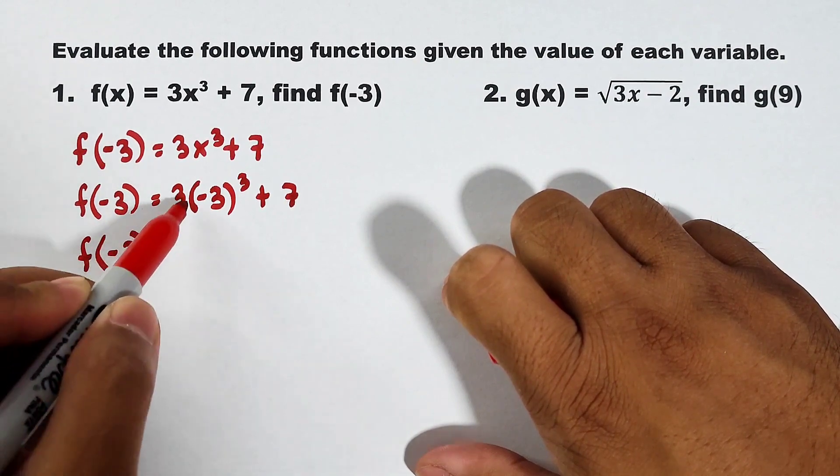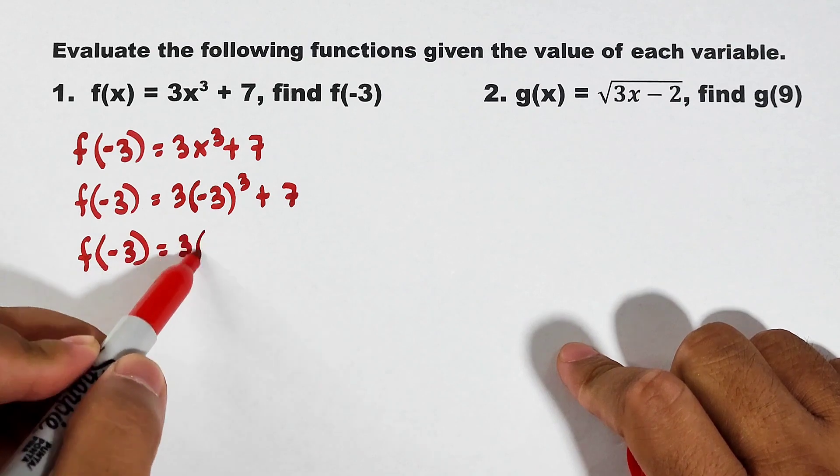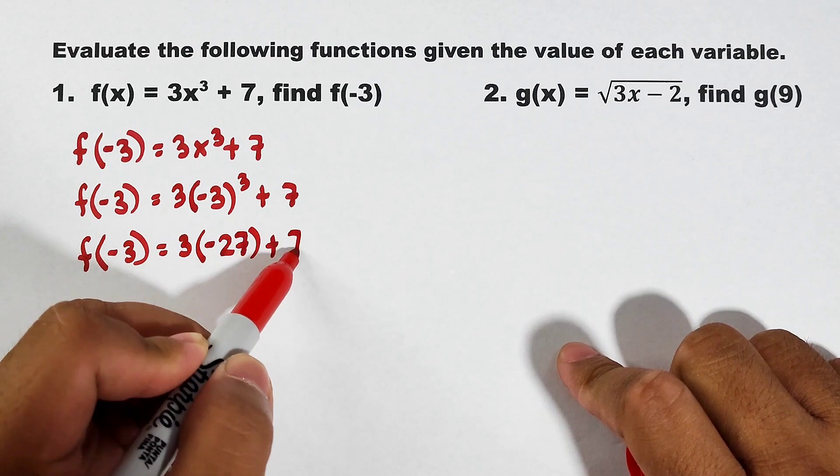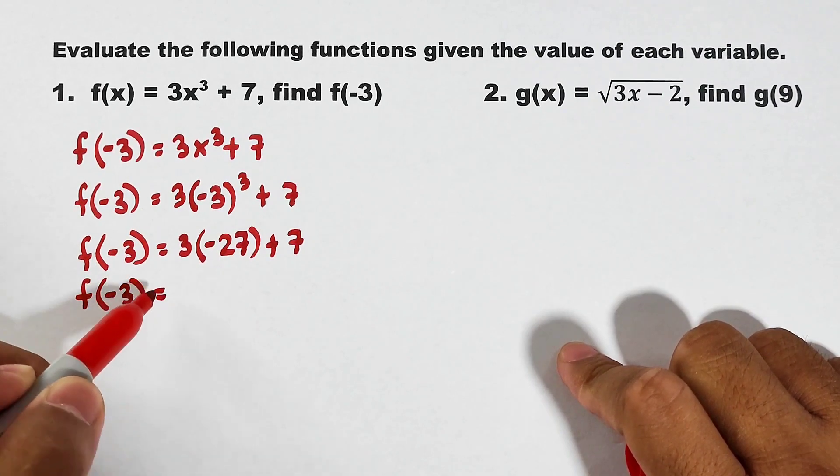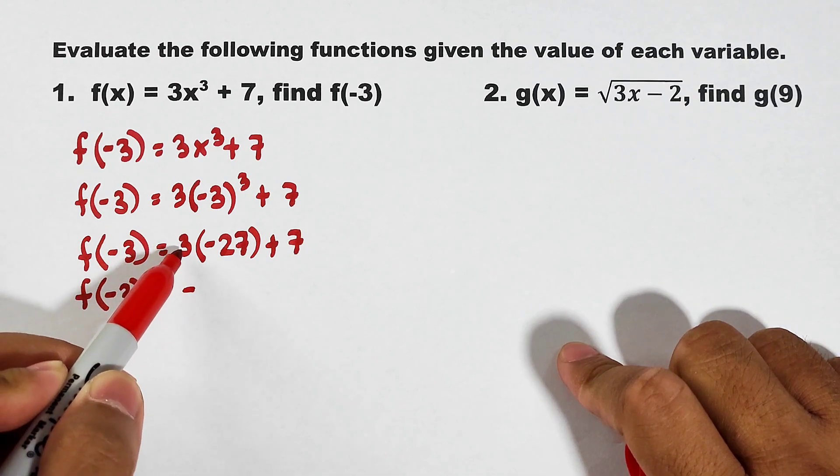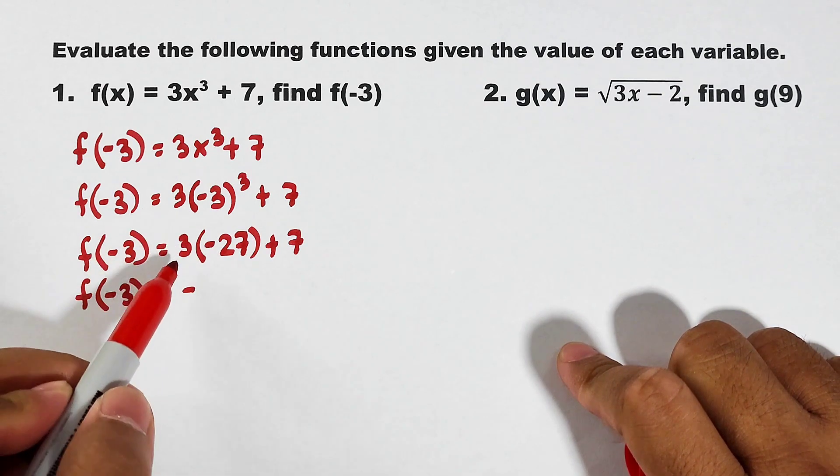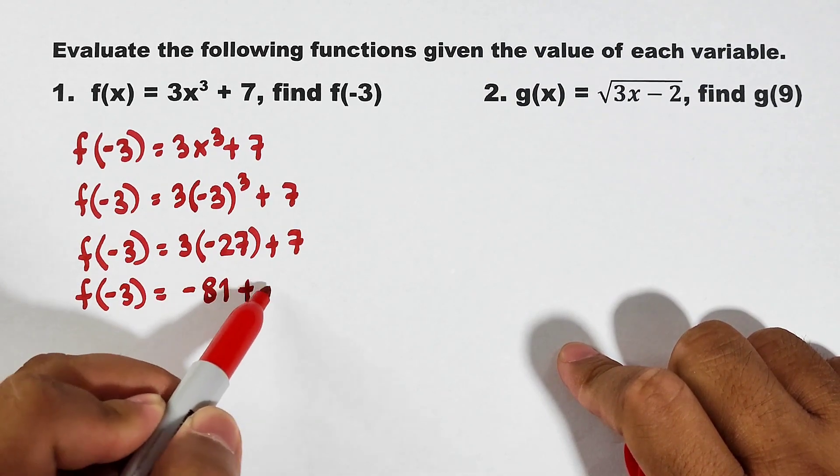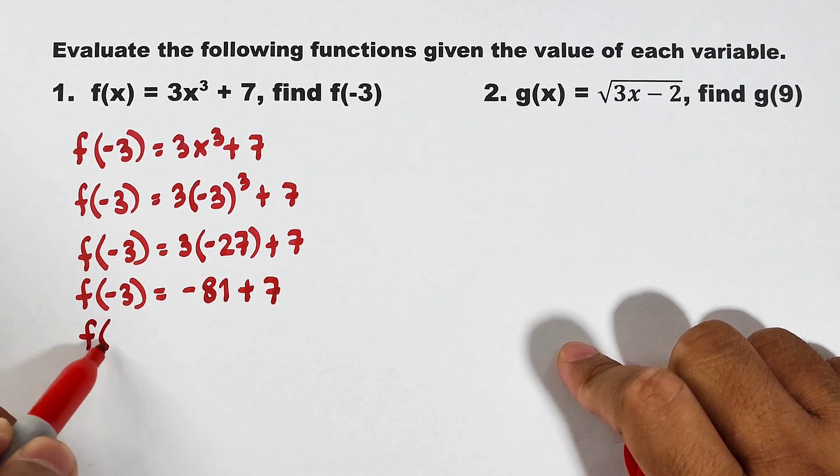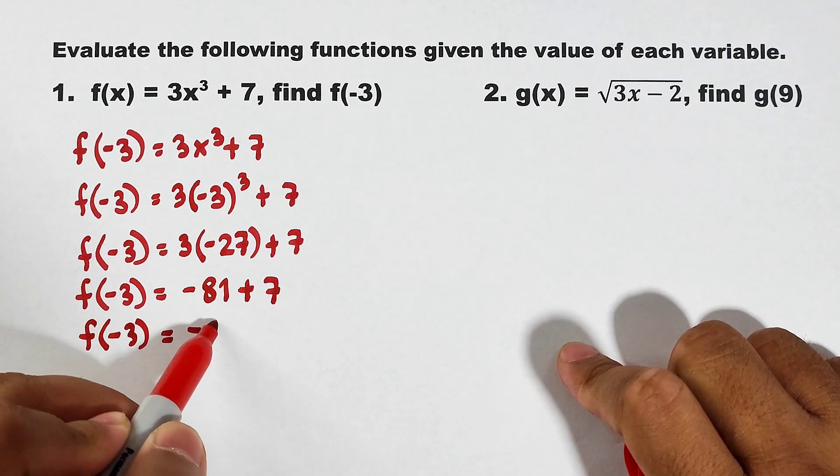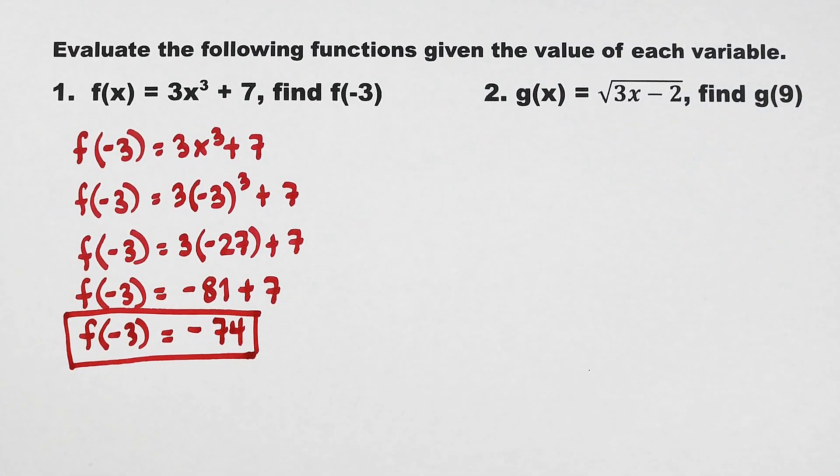Copy this one. F of negative 3 is equal to 3. And then simplify the exponent first. Negative 3 raised to the third power. That is negative 27 plus 7. Now, simplify this part. F of negative 3 is equal to how many? Negative 3 times 27 is negative 81 plus 7. And eventually, after adding negative 81 plus 7, the value of f of negative 3 is equal to negative 74. This is now the value of the function f of x if the input is negative 3.